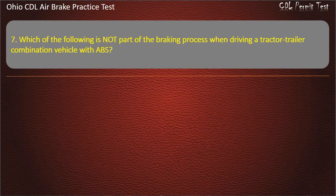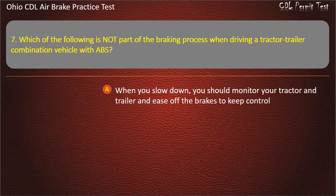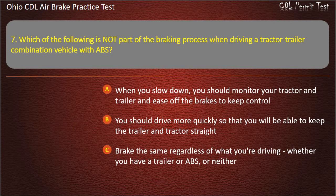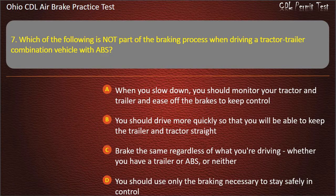Question 7: Which of the following is not part of the braking process when driving a tractor-trailer combination vehicle with ABS? When you slow down, you should monitor your tractor and trailer and ease off the brakes to keep control. You should drive more quickly so that you will be able to keep the trailer and tractor straight. Brake the same regardless of what you're driving, whether you have a cellar or ABS, or neither. You should use only the braking necessary to stay safely in control. Answer: You should drive more quickly so that you will be able to keep the trailer and tractor straight.